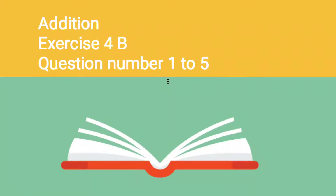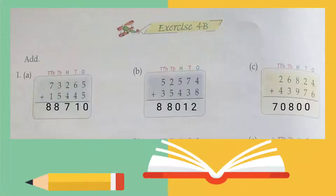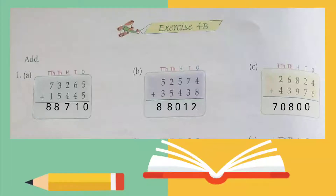Chapter 4, Addition — Exercise 4B. We are going to discuss question number one to question number five. In question one, part A, we have figures where digits are given and we have to add those numbers and write their answers. In part A we have five plus five.